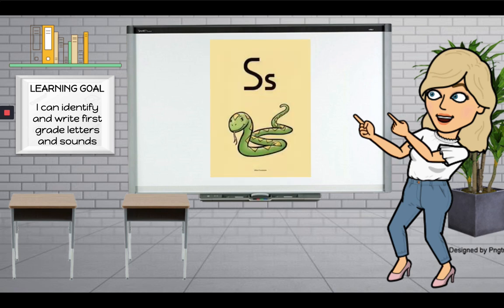Here's our next letter. Do you know what this letter is? Yeah, this letter is S. The keyword is snake and the sound is s. S, snake, s. Awesome! Let's try again. S, snake, s. Good job!